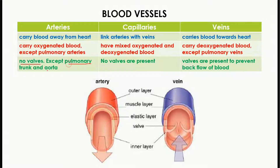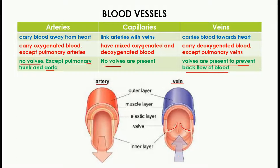Another difference is that in arteries no valves are present, except the pulmonary trunk and aorta. In capillaries, no valves are present either. In veins, valves are present, and their purpose is to prevent the backflow of blood. In this diagram you can see the artery has no valve, while the vein has valves — once the blood enters it cannot move back.